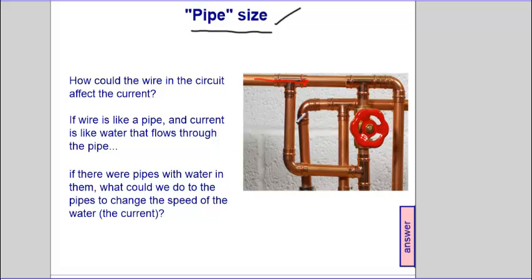So water can take many paths in this case, and how much water flows, each path will depend on the path itself. This is an interesting picture. So the question is, how could the wire in the circuit affect the current?